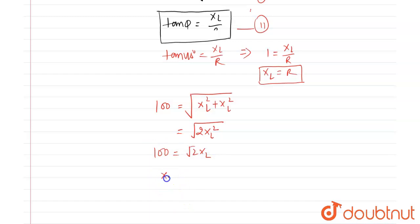So that is 100 is equal to root 2 XL. So XL is equal to 100 upon root 2. So XL is equal to 2 pi FL, which means 2 pi FL is equal to 100 upon root 2.